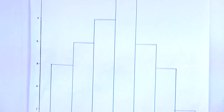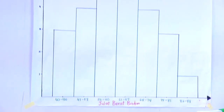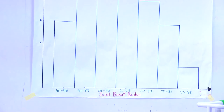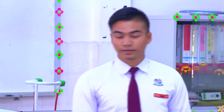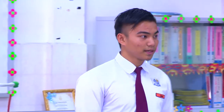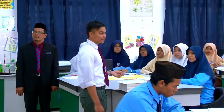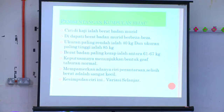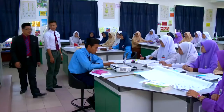Ini mempamerkan adanya ciri perantaraan. Selisih berat adalah sangat kecil. Kesimpulannya, ciri ini ialah variasi selanjar. Itu sahaja. Sekian, terima kasih.